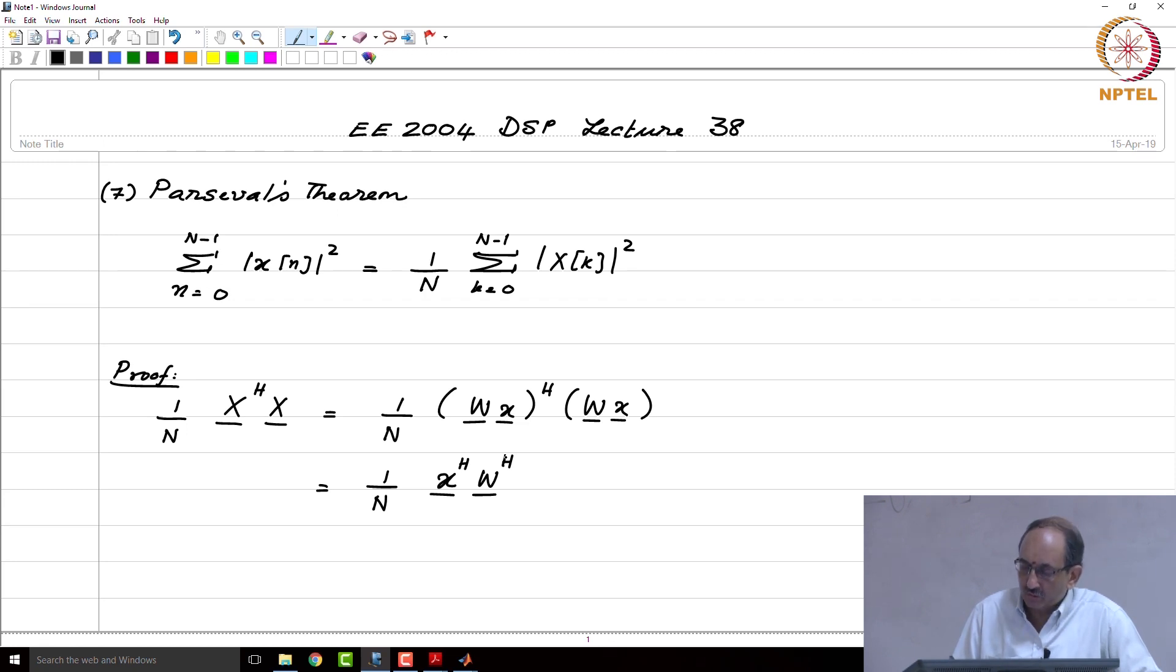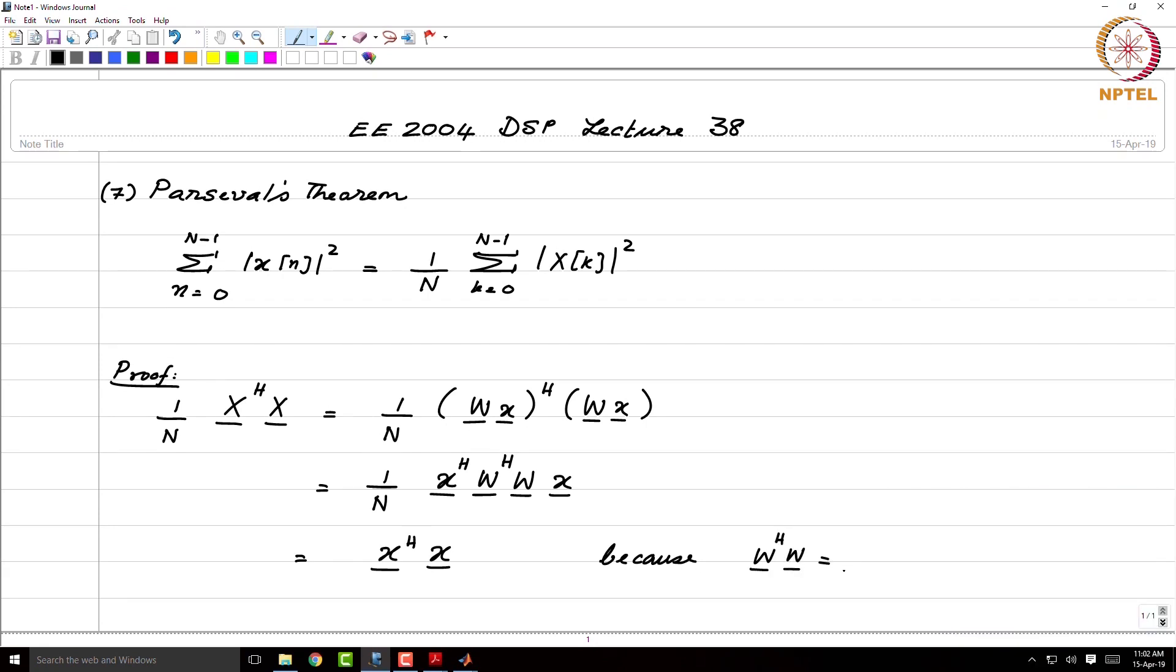W x whole Hermitian is x Hermitian W Hermitian times W times this. And this turns out to be x Hermitian x because W Hermitian W is n times the identity matrix.